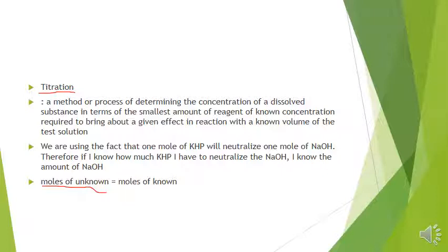What we're going to do is find the moles of an unknown from the moles of the known. We're going to use the fact that one mole of KHP will neutralize one mole of NaOH. KHP is an acid — it's potassium hydrogen phthalate — and you'll see its full name in the video.